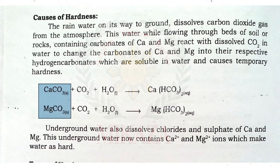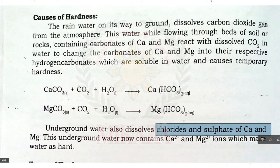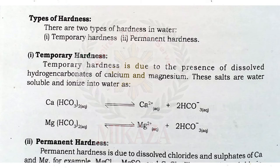Underground water therefore contains chlorides or sulfates of calcium and magnesium. There are two types of hardness: permanent hardness and temporary hardness.